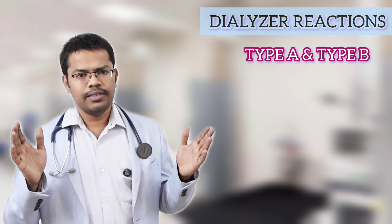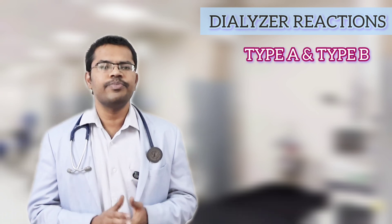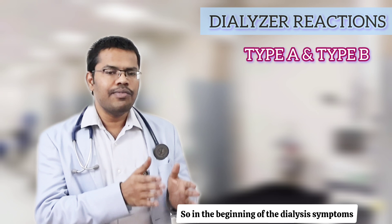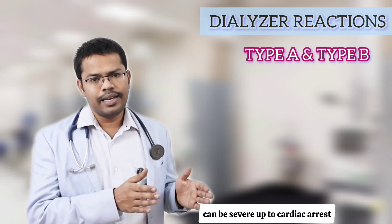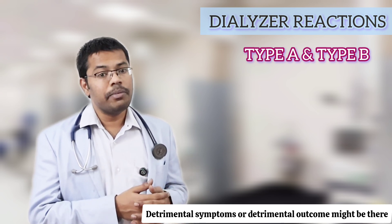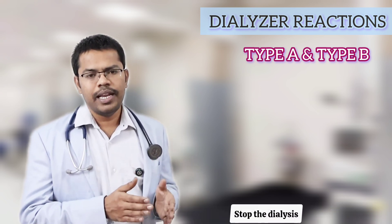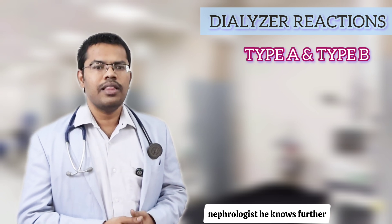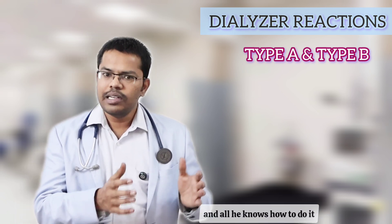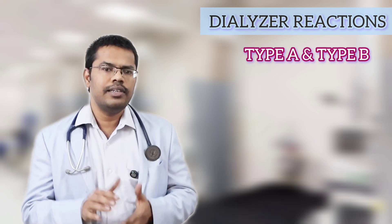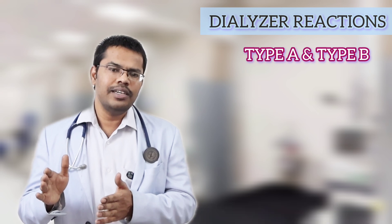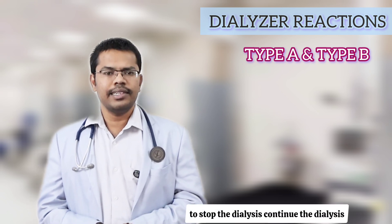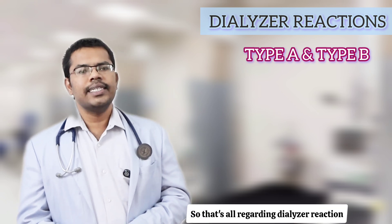Summary: Type A reaction — remember 'A' for anaphylaxis. It occurs at the beginning of dialysis. Symptoms can be severe, up to cardiac arrest. Stop the dialysis and inform the unit nephrologist; they know how to manage and change the dialyzer membrane. Type B is complement-mediated, occurs after 20 to 30 minutes, with mild symptoms. No need to stop — continue dialysis and it will resolve on its own.